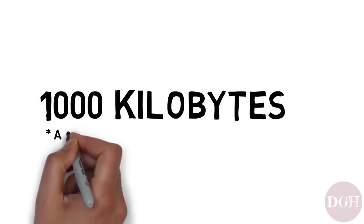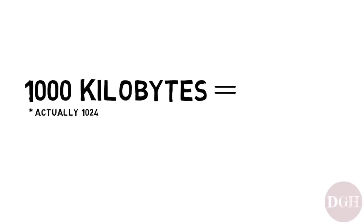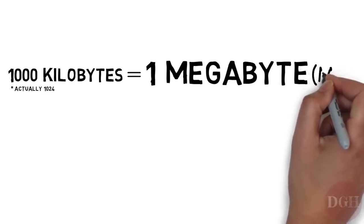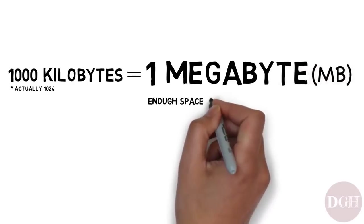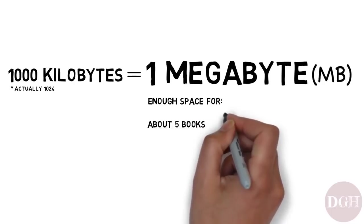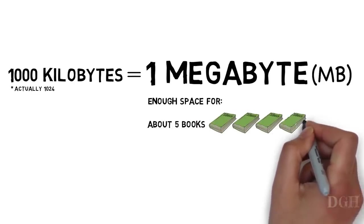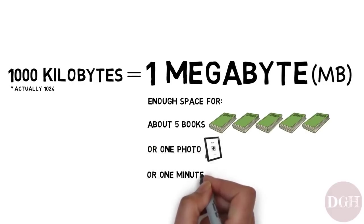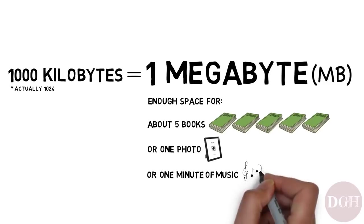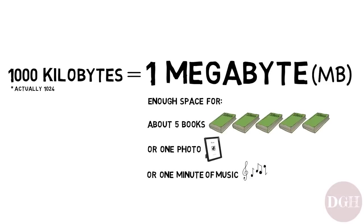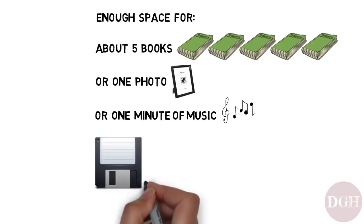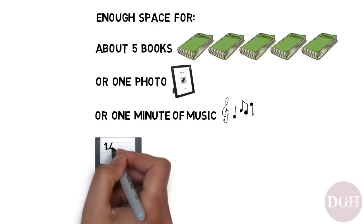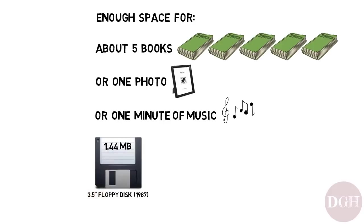A thousand kilobytes is called a megabyte, often abbreviated as MB. One megabyte is enough space to hold about five large books, or one photo, or one minute of music. This was a 3.5 inch floppy disk from the 1980s that held 1.4 megabytes of data, which was pretty good at the time because most files were pretty small.